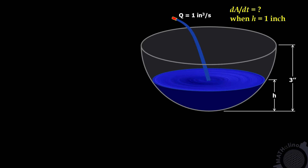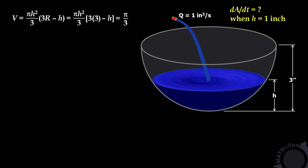To solve this problem, let us write the volume of the water inside the bowl. That volume is a segment of a sphere. The formula is pi h squared over 3 times (3R minus h), where capital R is the radius of the bowl. We have pi h squared over 3 times (3×3 minus h).